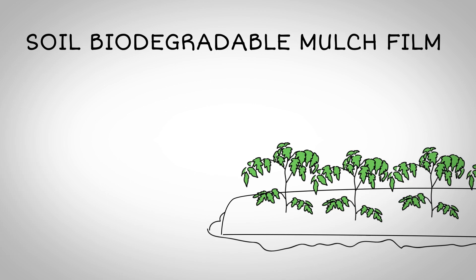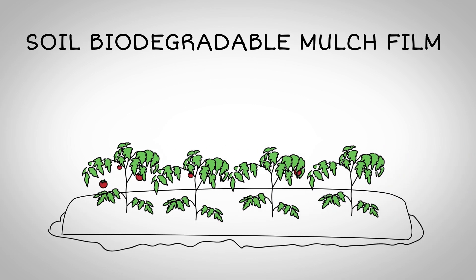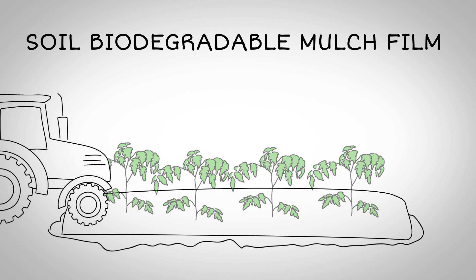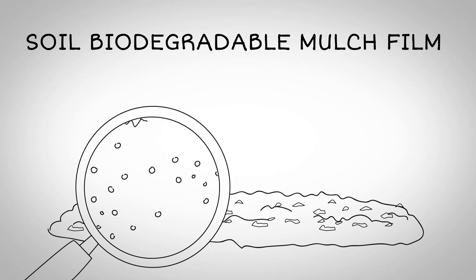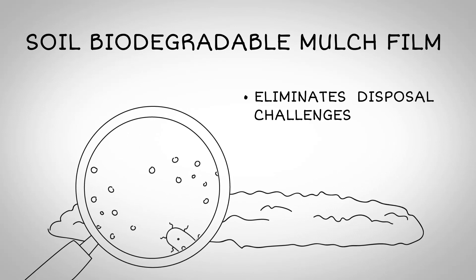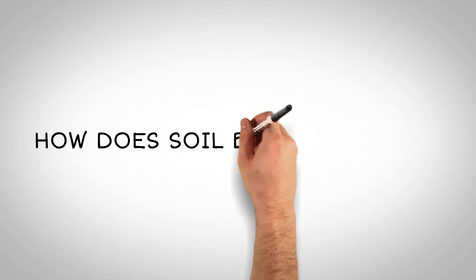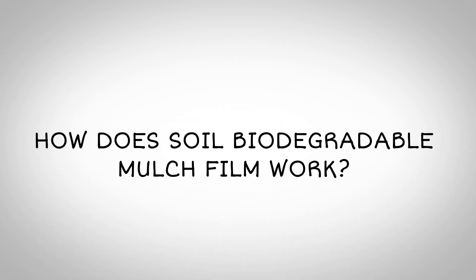Soil biodegradable mulch film provides the same benefits in the field while increasing sustainability. At the end of the season, the film is disced into the soil where it is consumed by microbes. This eliminates disposal challenges and the cost of labor for removal. But how does soil biodegradable mulch film work?